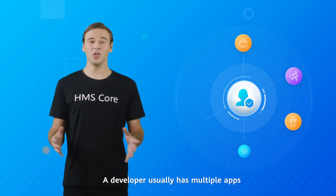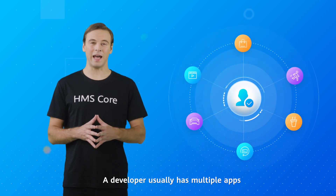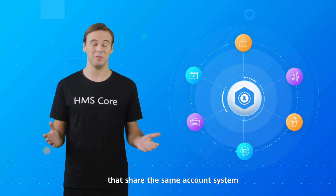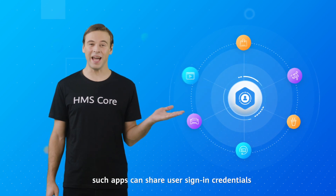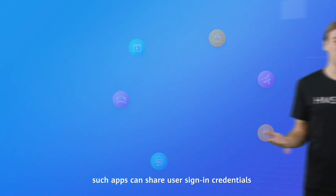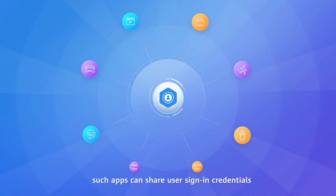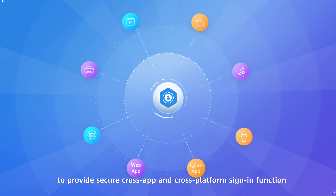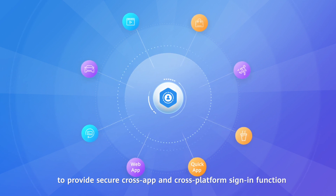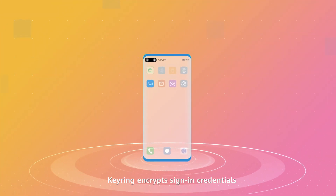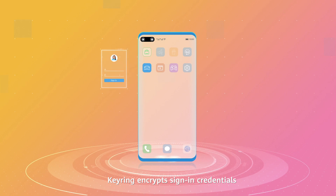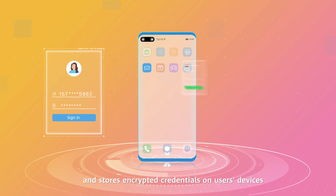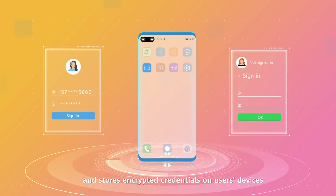A developer usually has multiple apps that share the same account system. With Keyring, such apps can share user sign-in credentials to provide secure cross-app and cross-platform sign-in functionality. Keyring encrypts sign-in credentials and stores encrypted credentials on users' devices.